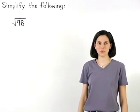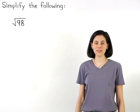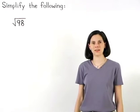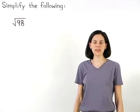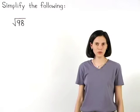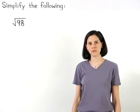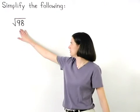The difference with this example is that 98 is not a perfect square. In other words, it's impossible to find a whole number times itself which equals 98.